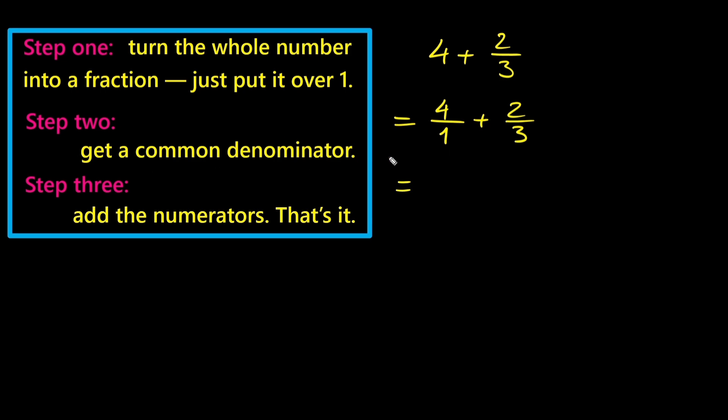Now we need common denominators. Since the other fraction has a denominator of three, we're going to multiply both the top and the bottom of four over one by three. That gives us twelve over three.